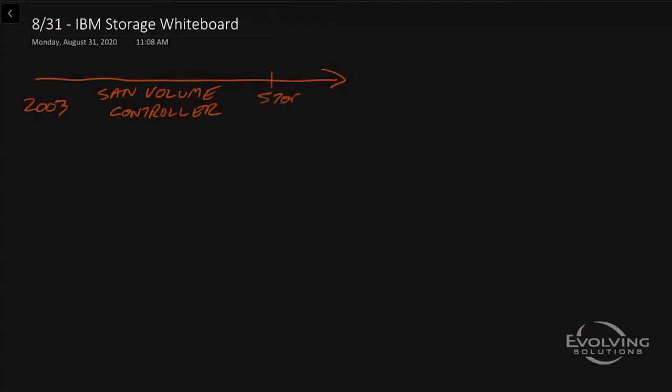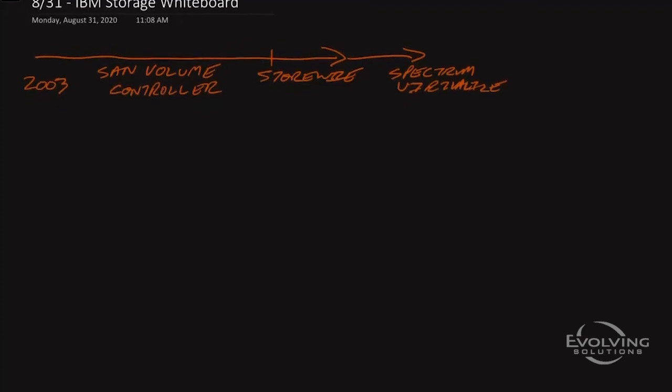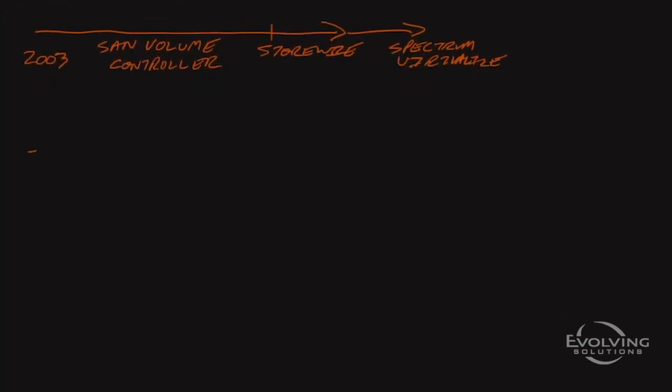Later in that life, they added internal capacity and named a product Storewise. So if you're familiar with the SAN volume controller with internal capacity, you might have heard it as Storewise. And then further down the line, the software only version of that became known as Spectrum Virtualize. That product line has continued on to this day and has a very strong following.